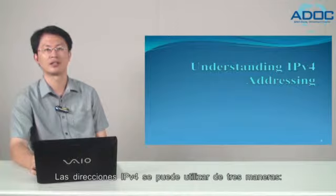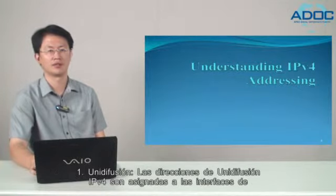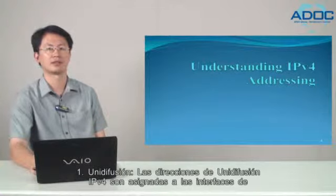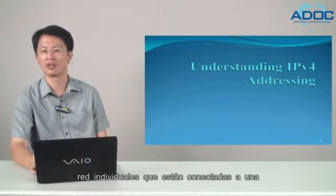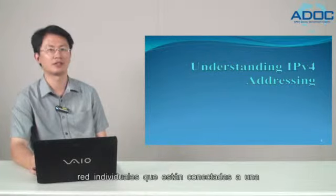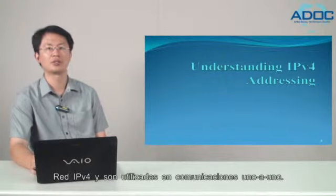IPv4 addresses can be used in three ways. First, unicast. Unicast IPv4 addresses are assigned to individual network interfaces attached to an IPv4 network, and are used in one-to-one communications.